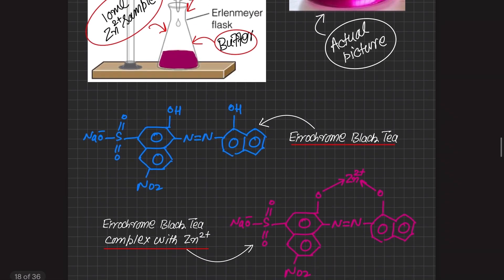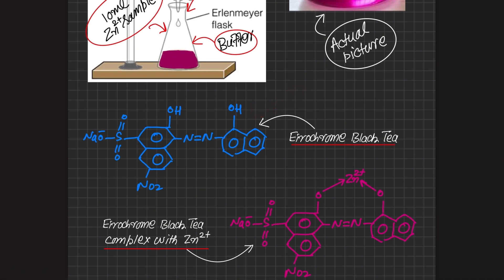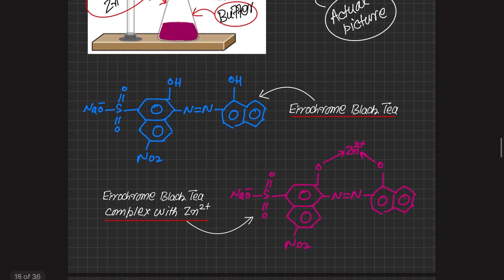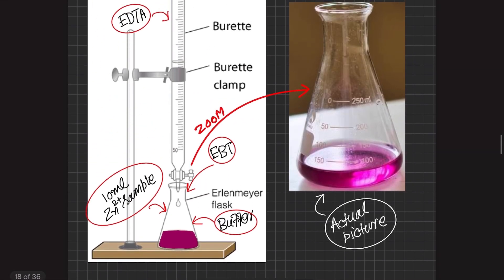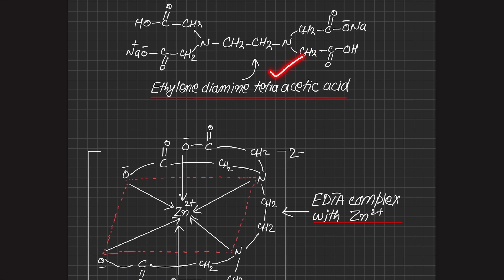Looking at the structure of Eriochrome Black T — this is its structure — and after forming a complex with zinc, this is the overall structure that results. The original color is bluish in tone, whereas after forming a complex with zinc the color turns wine red, as shown in the figure above.